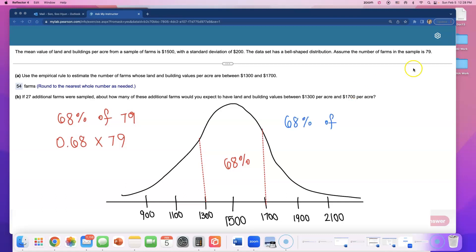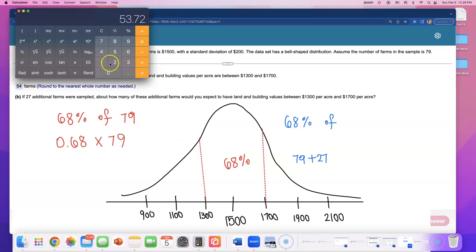We're still doing 68% of how many farms. They used to have 79 farms, but they are getting 27 more farms. So I'm going to do 79 plus 27, that's how many farms we got this time. 79 plus 27, that comes out to be 106. So let's find 68% of 106 farms this time: 0.68 times 106.